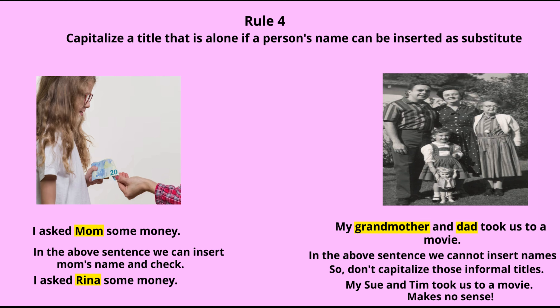So here mom has been capitalized. But in the second image, you can see a family. 'My grandmother and dad took us to a movie.' Now let's try to insert names in place of grandmother and dad: 'My Sue and Tim took us to the movie.' Does that make sense? No — you cannot say 'my Sue.' So here, grandmother and dad are not capitalized. Going back to the first slide: 'Did dad give you that?' — if we replace dad with Jim: 'Did Jim give you that?' — that makes sense. That is the reason we capitalized dad in that sentence.